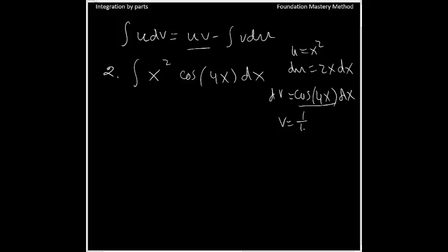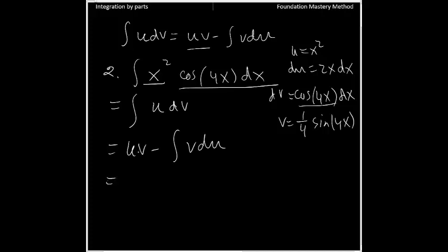So then v will be the integral of cosine, which I have mentioned already, will be one-fourth sine 4x. This problem reduces to udv, so the form gives me uv minus integral v du.